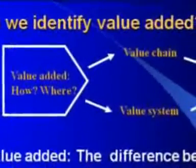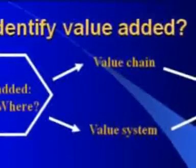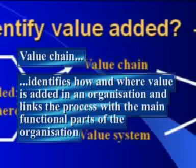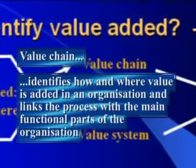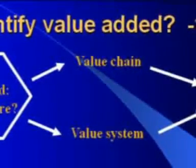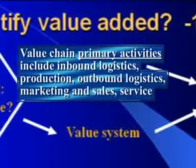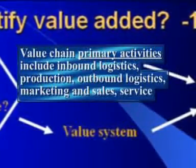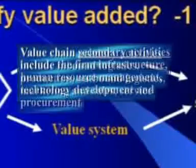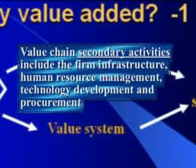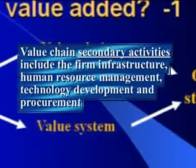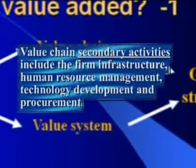In addition to the concept of value added, we have the related concept of the value chain. The chain identifies how value is added in an organisation, especially those elements associated with the main functional parts such as production and marketing. The value chain is usually divided into primary activities and support activities. You can see how this analysis can be applied in the fashion industry in Chapter 4, where there are two or three areas of the value chain that have high value added for a fashion company.